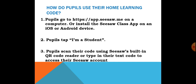Your teacher will also provide you with a barcode, which is an alternative means to sign in instead of using your Seesaw home learning code. All you do is scan the barcode using the QR code reader that you'll see on Seesaw.